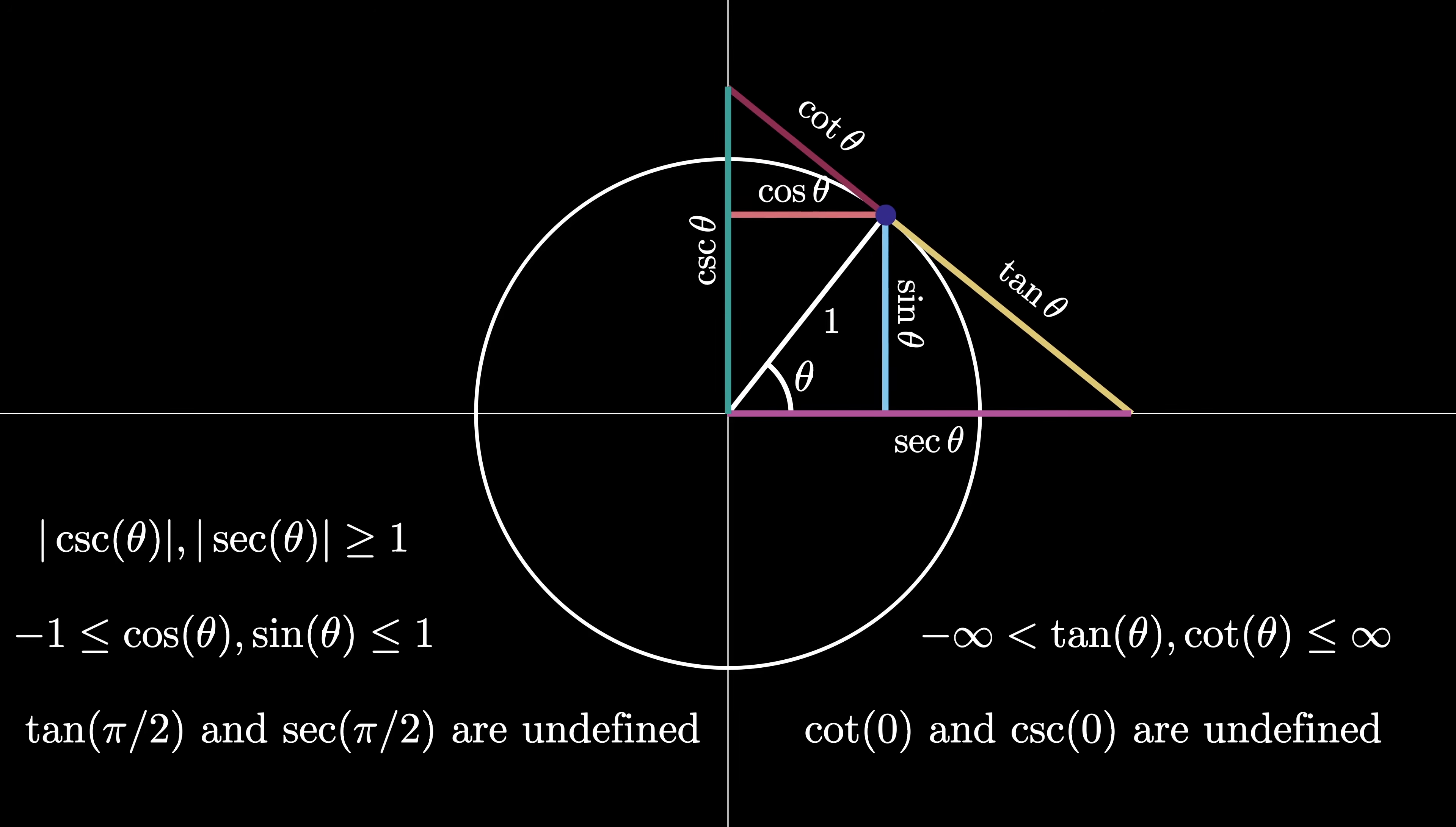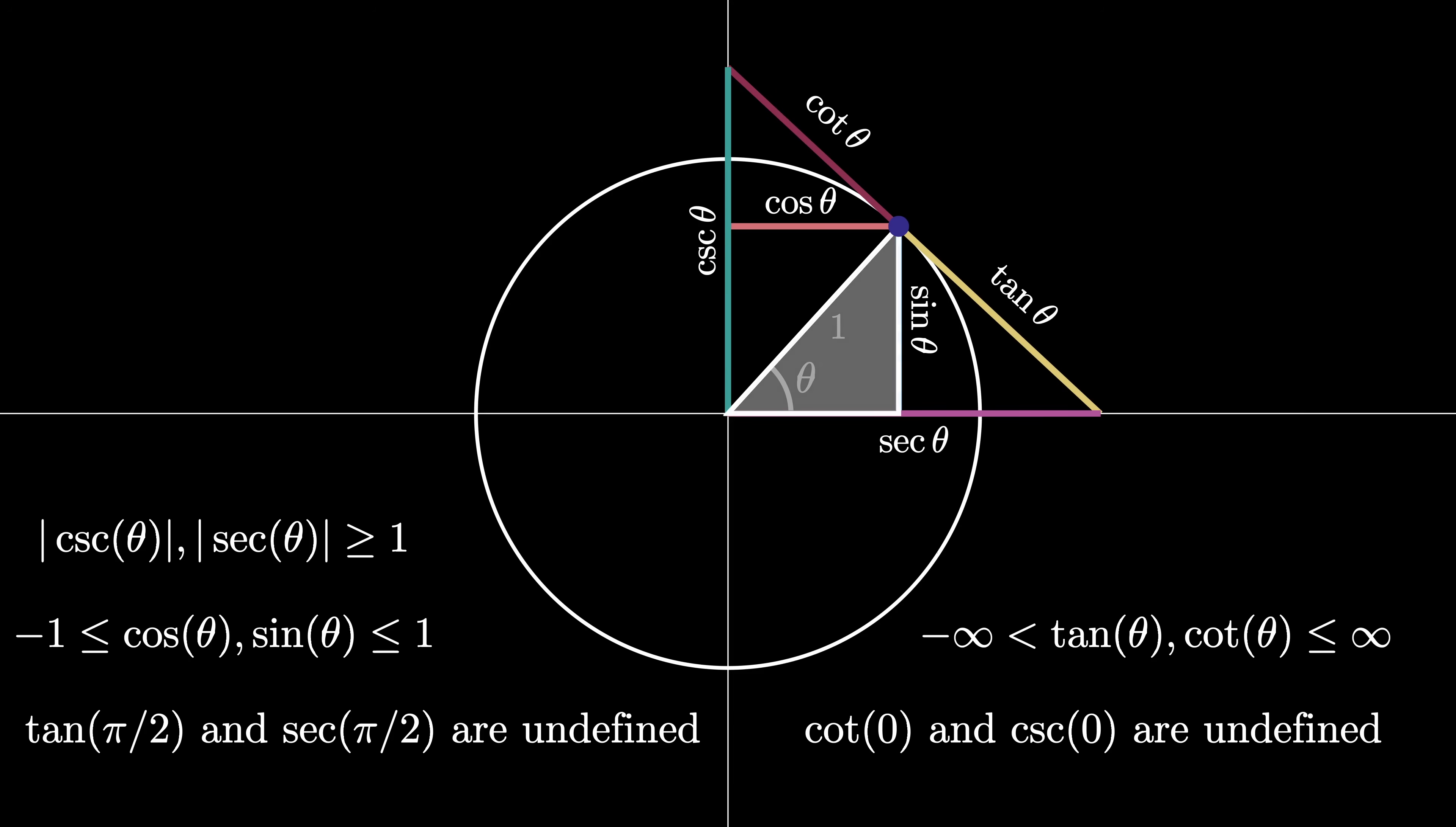Returning to our general diagram, we can apply the Pythagorean theorem to gain more insight about the trig functions. From this original right triangle, we see that the sine squared of theta plus the cosine squared of theta must equal 1.